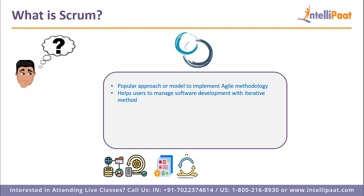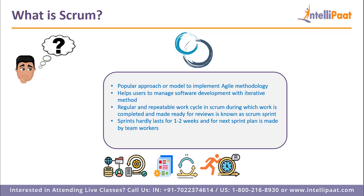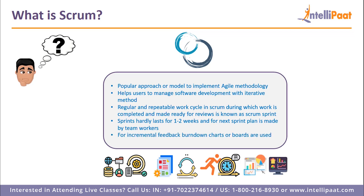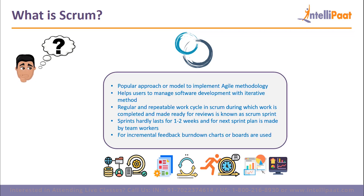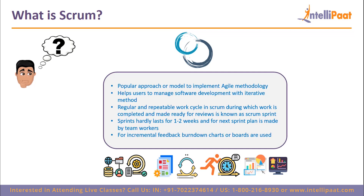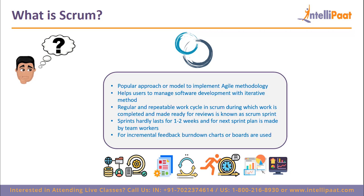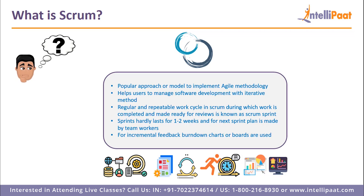Scrum is the most popular approach to implement Agile methodology — it is a subset of Agile. Scrum is not a process or technique but a simple framework to address complex problems and deliver high-value products more creatively. It helps teams manage software development with an iterative method. Meetings, roles, and responsibilities are fixed in Scrum. A regular and repeatable work cycle during which work is completed and made ready for review is known as a Scrum Sprint. Sprints are units of software development in the Scrum framework, allowing frequent product shipment. A Sprint lasts 1–2 weeks, and at the end of each Sprint, team members or stakeholders plan the next steps. Each Sprint includes Sprint Planning and Sprint Demo, where tasks are identified and an estimated commitment for the Sprint Goal is made. The team uses visual artifacts like burndown charts or boards to receive incremental feedback and show progress.